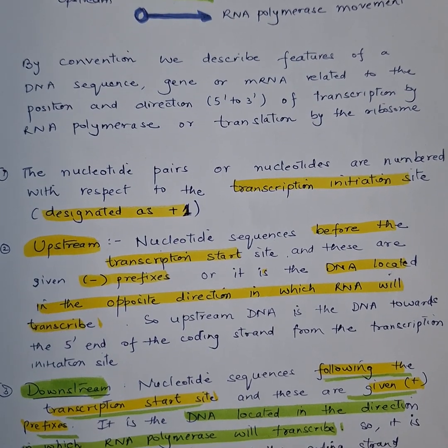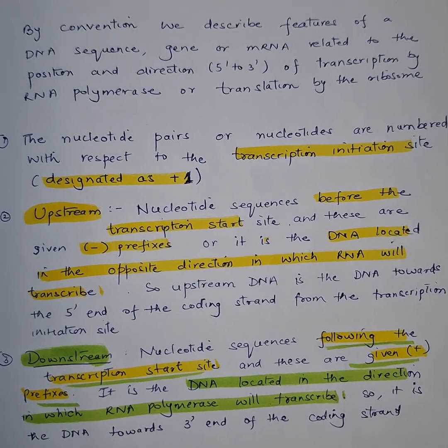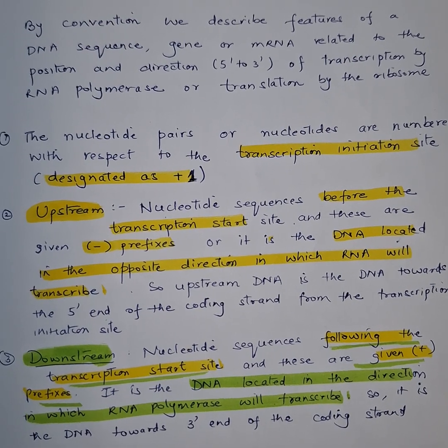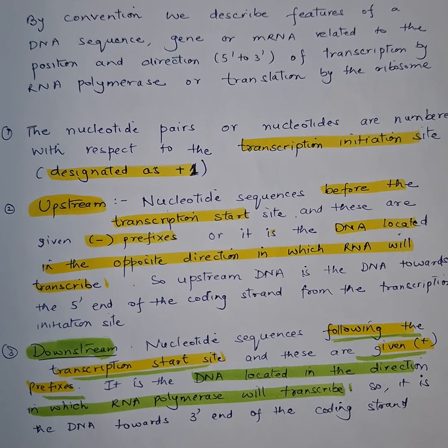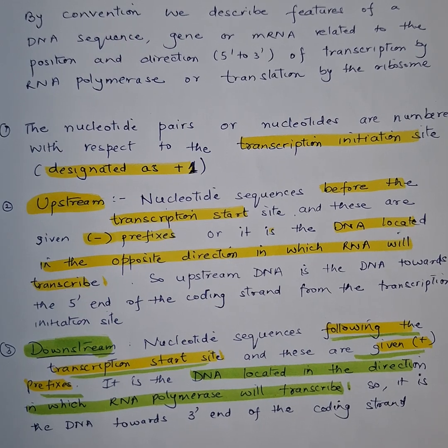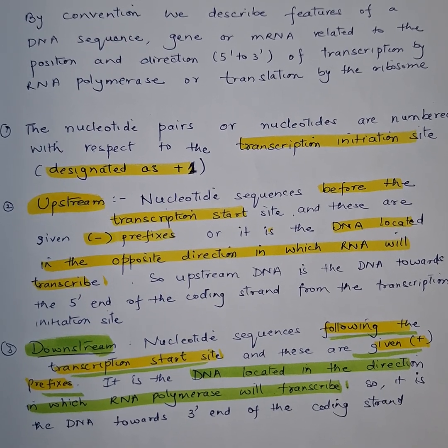Talking about the downstream, it is a nucleotide sequence following the transcription start site and these are given plus prefix. It is the DNA located in the direction in which the RNA polymerase will transcribe.